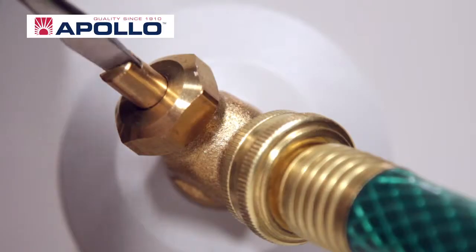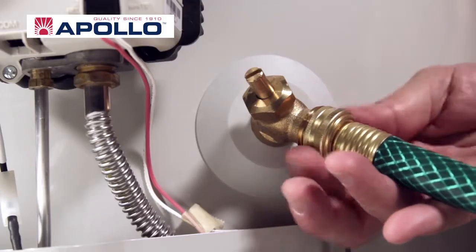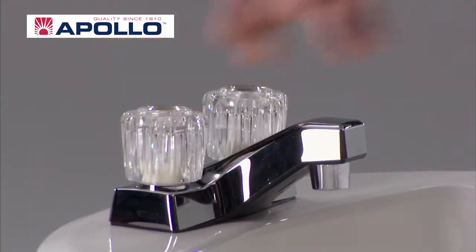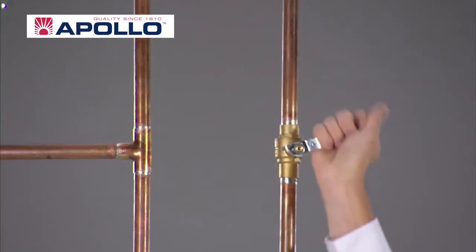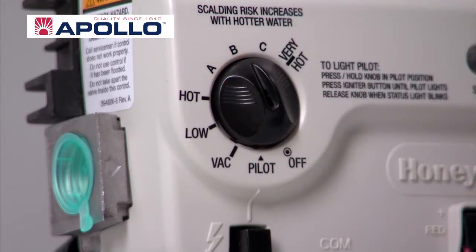When you're all done, close the valve and disconnect the garden hose. Turn off the hot water. Turn your cold water supply back on. And turn your thermostat back to the temperature you want.